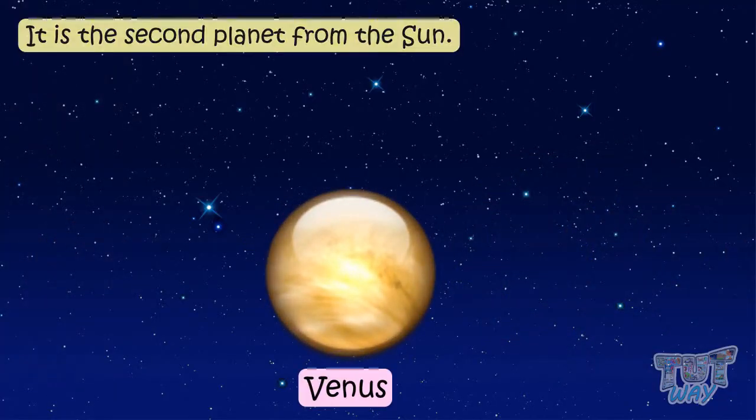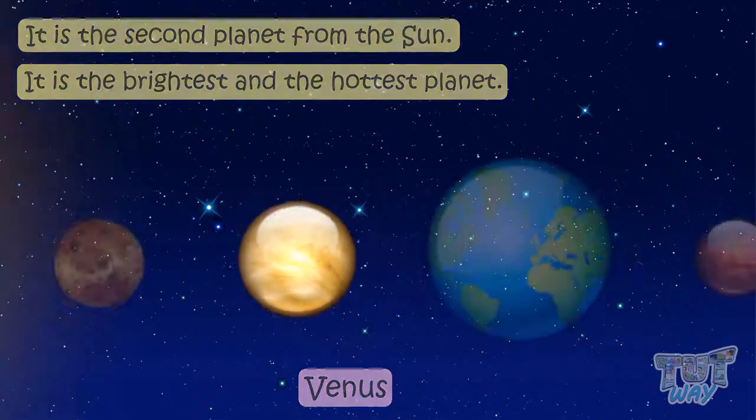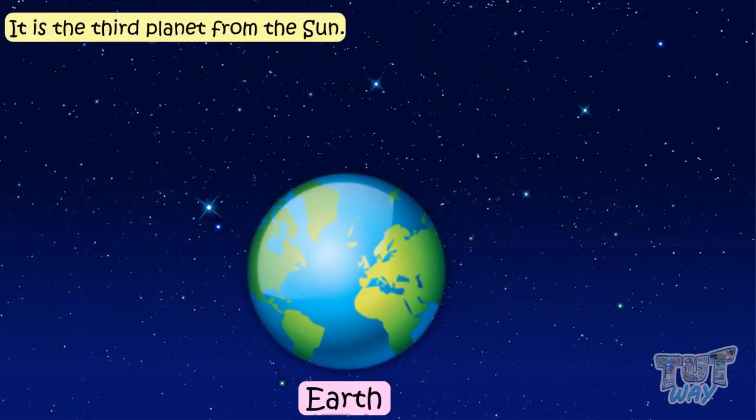Venus. It is the second planet. It is the brightest and the hottest planet. So Mercury is the closest to the Sun but Venus is the hottest planet not Mercury.